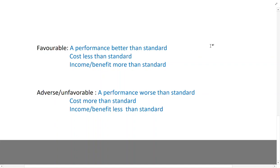What is a favorable variance? It could be that we have incurred less cost than standard, or it could be that we have earned more income than standard. When cost is less than standard and income is more than standard, we have a favorable variance.